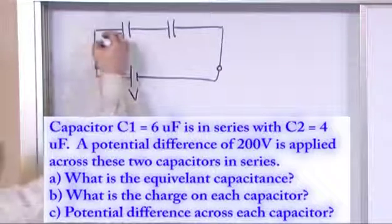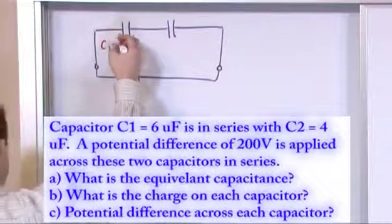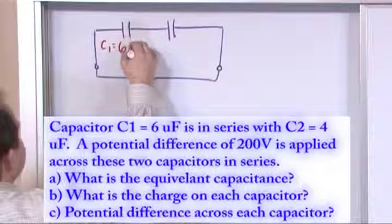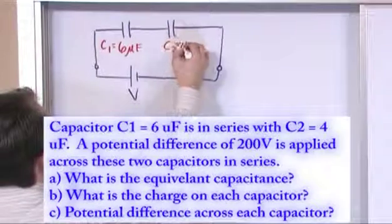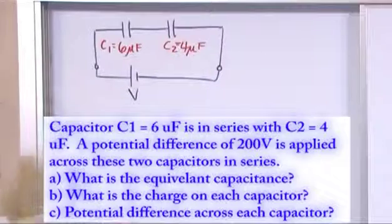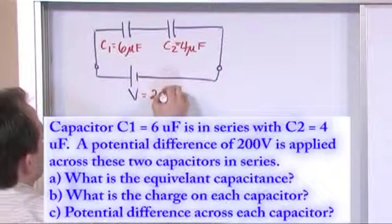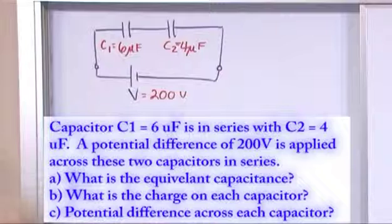This capacitor C1 is 6 microfarads, and then C2 is 4 microfarads. Those are the values, and the voltage is 200 volts. Those are all given to you in the problem.